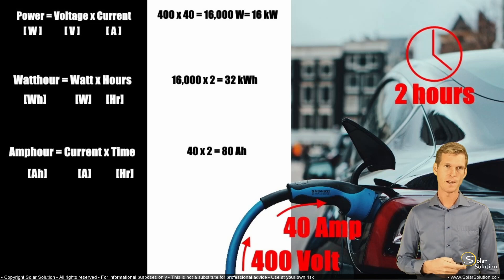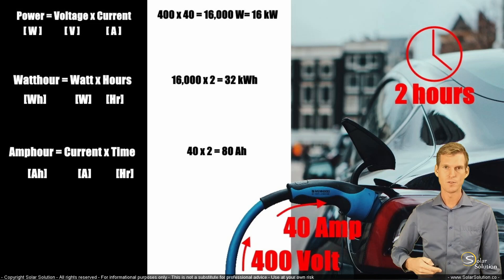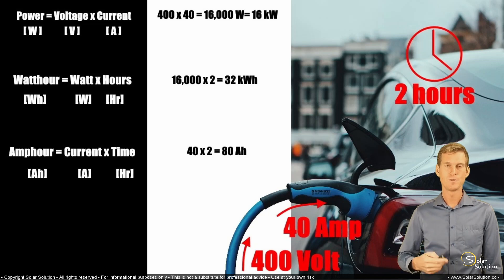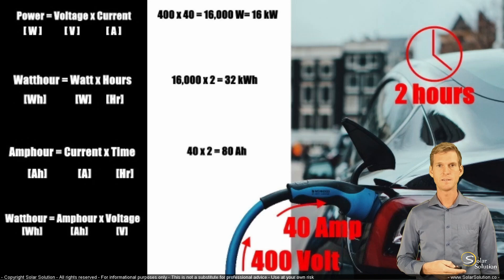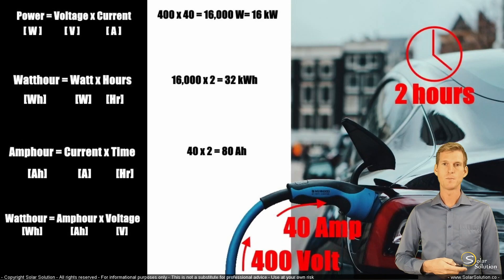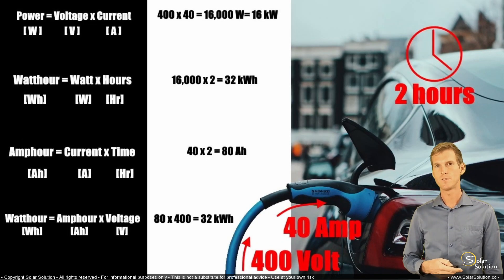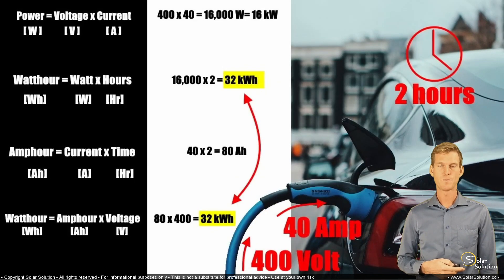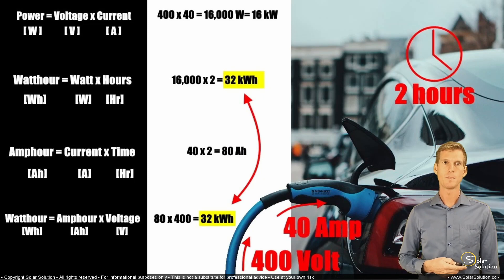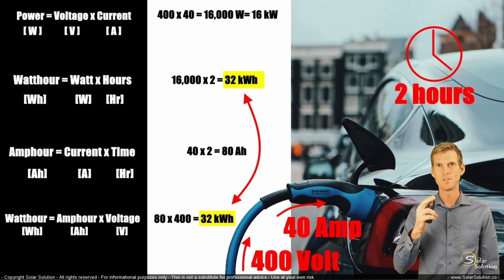Then if we want to calculate the watt hours — the total amount of electrical energy that we have put into your vehicle during the complete charging cycle — we take the amp hours, 80, and multiply it by the voltage with which we are charging your vehicle, 400. The result is 32 kilowatt hours, or 32,000 watt hours, which is the same as what we calculated before in the second step.